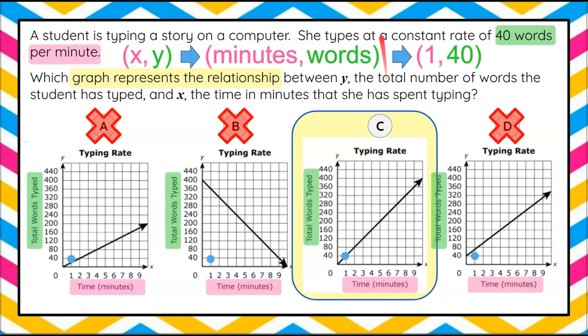The other thing we want to point out is we have a constant rate of 40 words per minute. And we can see this as a proportional relationship because the graph begins or passes through the origin. And it's a straight line.